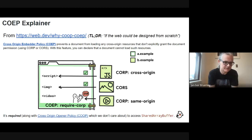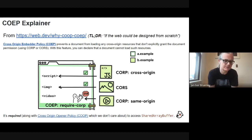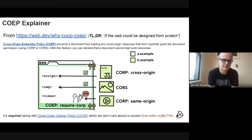There are a lot of different acronyms here: cross-origin opener policy, CORS, and CORP. The most important one is the embedder policy, which prevents the document from loading any cross-origin resources that don't explicitly grant the document permission using CORP or CORS. With this feature you can declare that the document cannot load such resources. You can specify a header called 'Cross-Origin-Embedder-Policy: require-corp', and once you have that policy it applies.